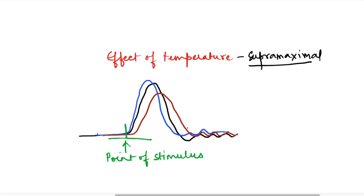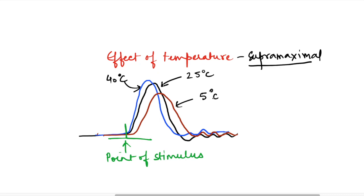In this graph, the center black-colored graph is recorded at room temperature, say 25 degrees Celsius. The blue graph is recorded at a warm temperature, say 40 degrees Celsius, and the brown graph is at cold temperature, say 5 degrees Celsius. What are your observations from this graph?